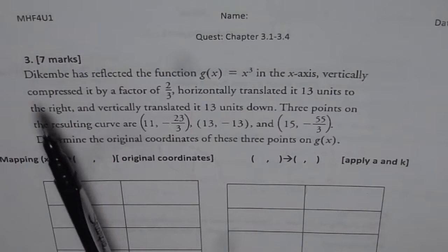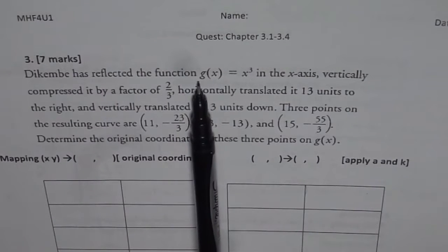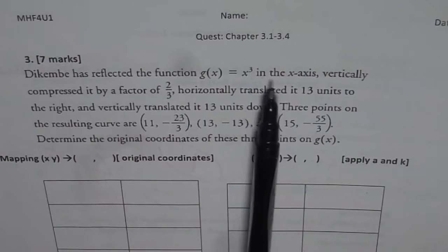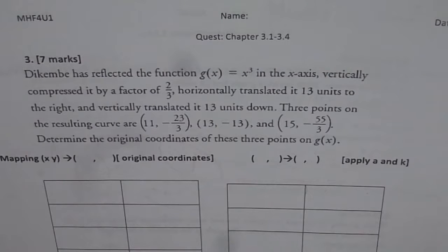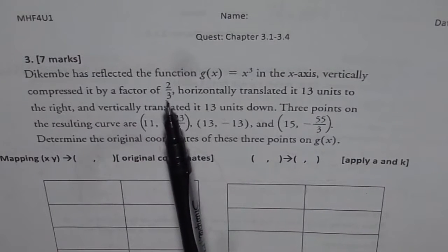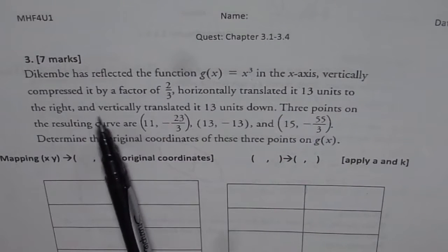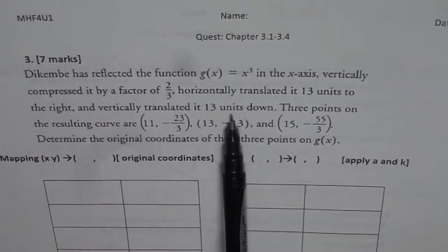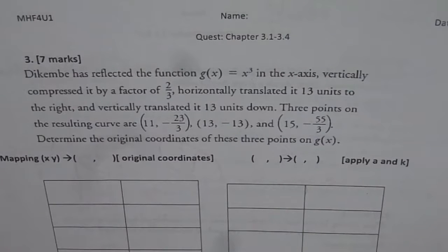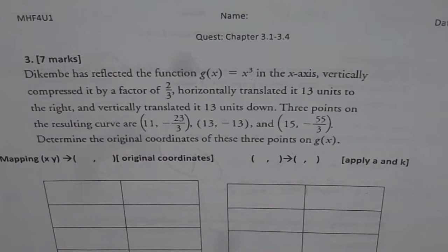The question is that a person has reflected the function g(x) = x³ in the x-axis, vertically compressed it by a factor of 2/3, horizontally translated it 13 units to the right, and vertically translated it 13 units down. Three points on the resulting curve are (11, -23/3), (13, -13), and (15, -55/3). Determine the original coordinates of these three points on g(x).